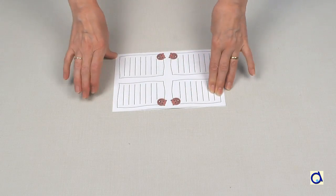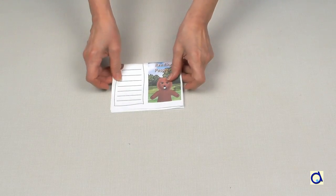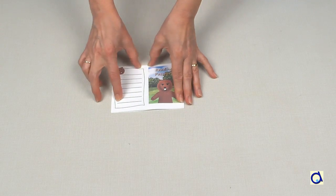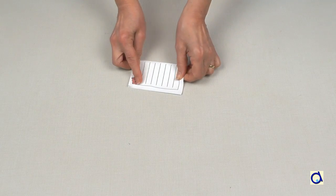Fold the sheet in half across the middle. Crease every fold. Next, fold the paper in half the other way and then in half again. Your paper is now folded in eight.